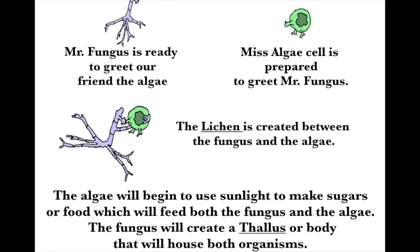Then we have a type of symbiosis called lichen. This is where fungus and algae work together — it is a type of mutualism. Algae will use sunlight to make food for the fungi and for itself, while fungi will protect it by creating a thallus, or a protective covering. So lichen is an example of mutualism.